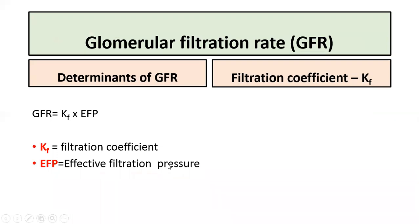According to Starling's hypothesis, the glomerular filtration rate can be expressed as the product of filtration coefficient times the effective filtration pressure. If there is an increase in the filtration coefficient, the glomerular filtration rate is increased, and if there is an increase in the effective filtration pressure, the glomerular filtration rate also increases.